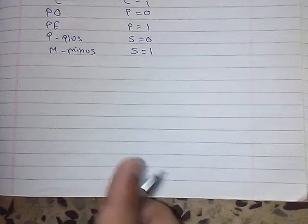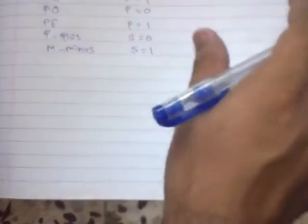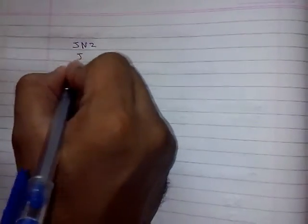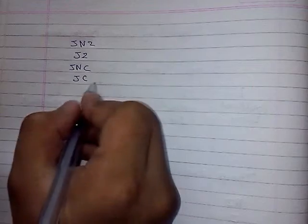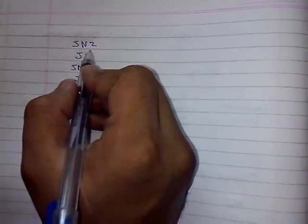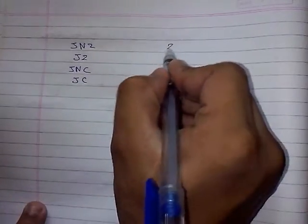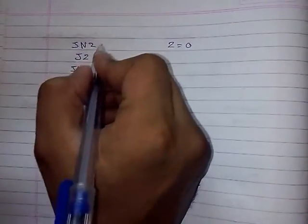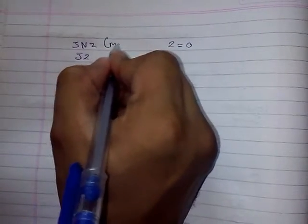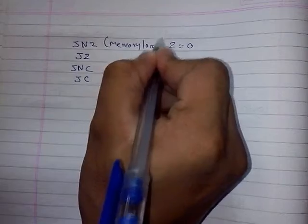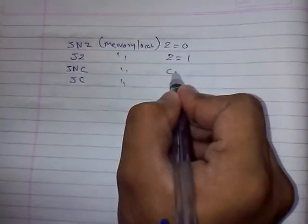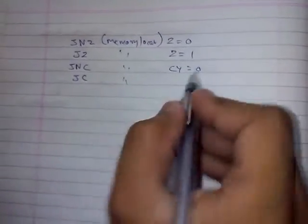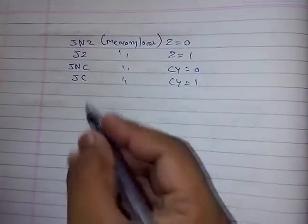Now we will see jump instructions — conditionals. By making use of all these instructions, we write conditional jumps as JNZ or JZ, JNC, JC, etc. When we write JNZ, it will check the zero flag. If Z is zero, then this condition will be executed and it will jump to the memory location specified. JZ will check if Z is equal to one. JNC will check if the carry flag is equal to zero, and JC will check if the carry flag is equal to one.